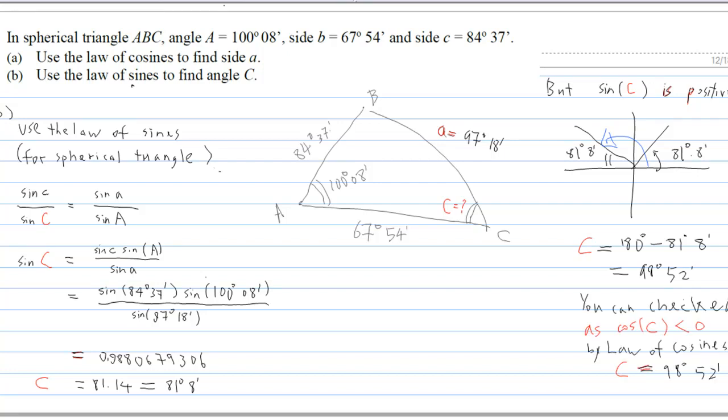Now you can check yourself that using the law of cosines, we find that cosine C is less than zero. Therefore, if cosine C is less than zero, we know C is actually more than 90 degrees. So C should be 98 degrees 52 minutes. And that is how we can confirm that angle C is 98 degrees 52 minutes.